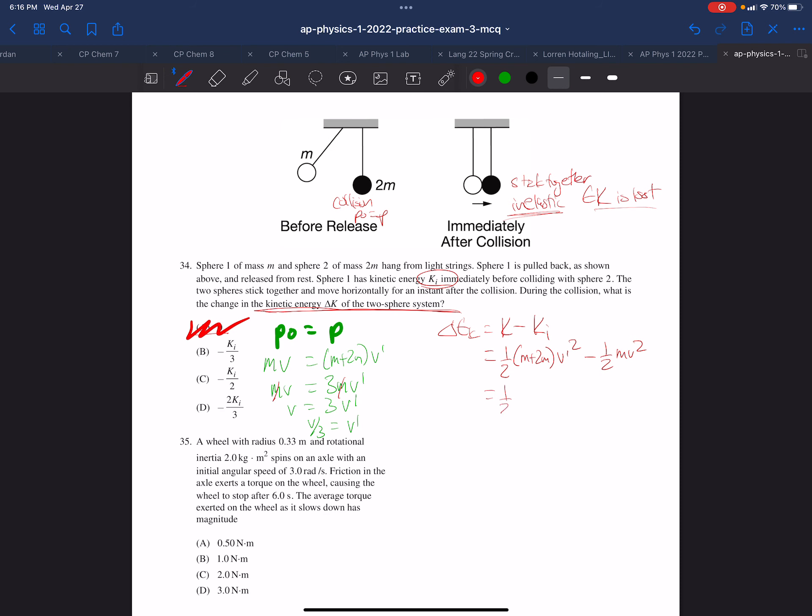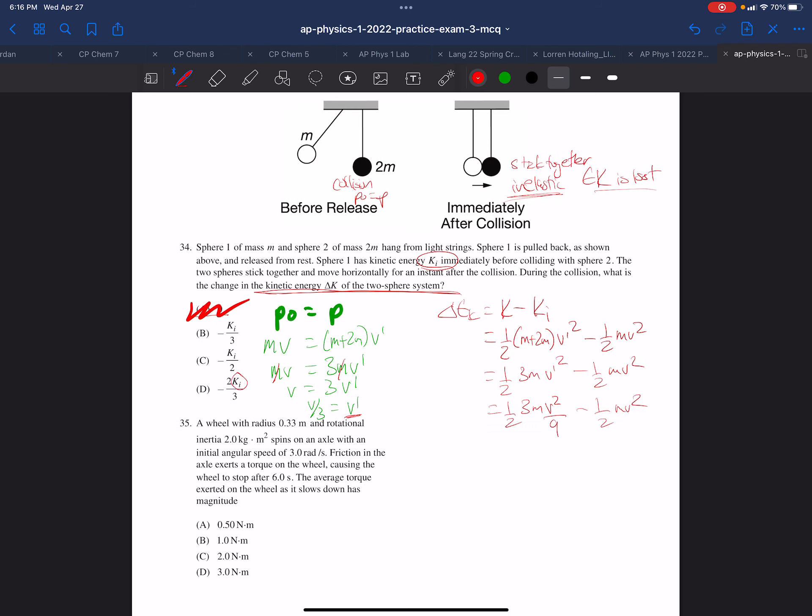So now we'll combine these terms 3m. And now what we want to do next is substitute in for v prime. So we have 1 half 3m v squared over 9. v over 3 squared is v squared over 9 minus 1 half mv squared. Now since the answer is expressed in terms of initial kinetic energy, the initial kinetic energy is 1 half mv squared. So I'm going to factor out a 1 half mv squared.